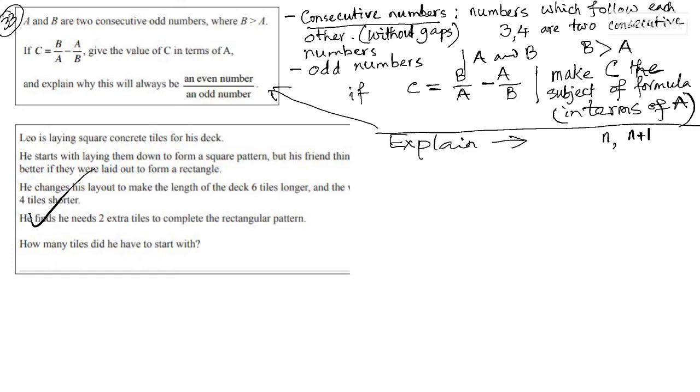Now, we got to understand the difference between odd numbers and even numbers. And one other condition which is given is B is greater than A. So you got to understand the question in terms of A.